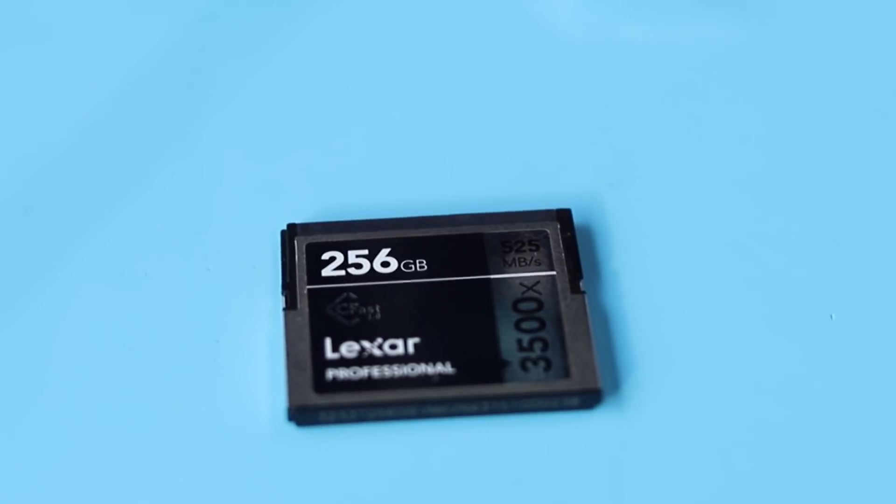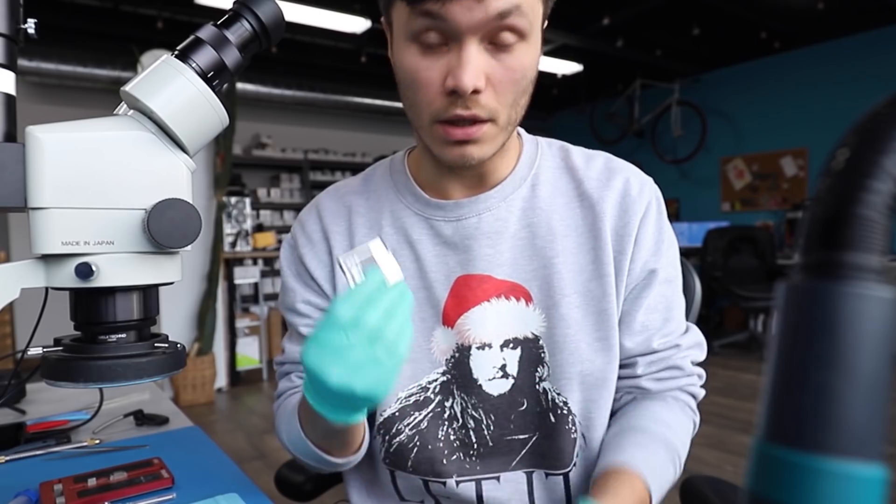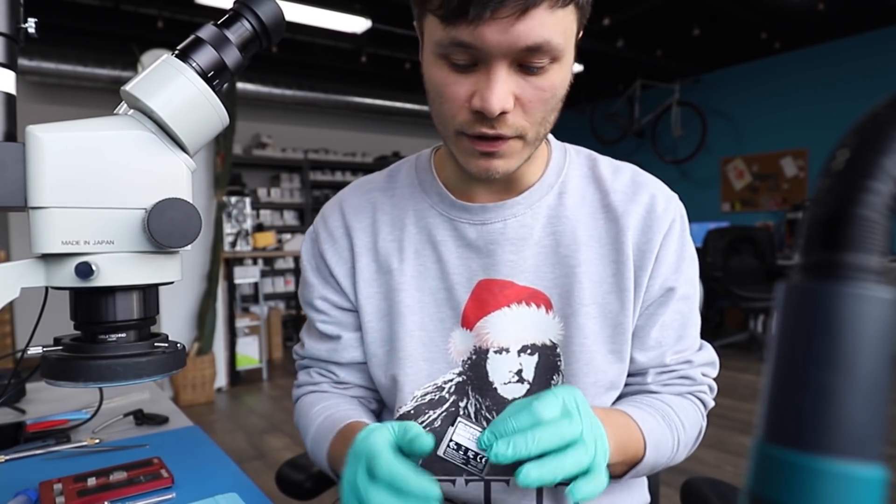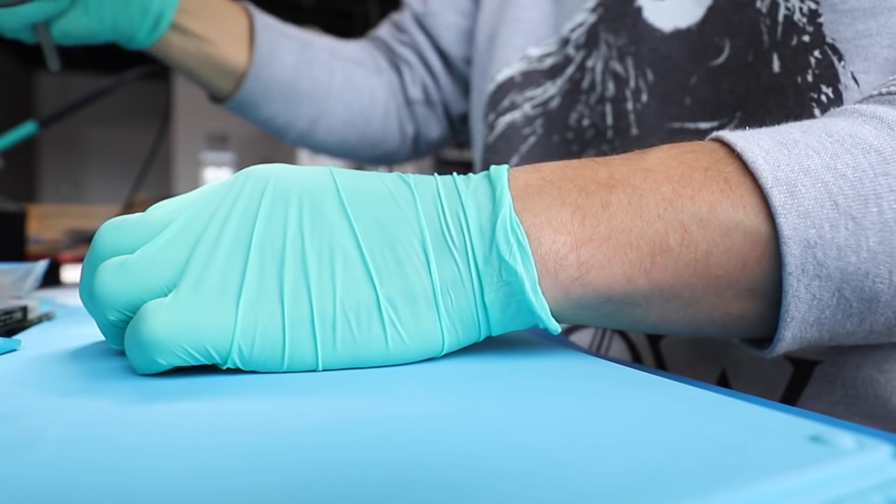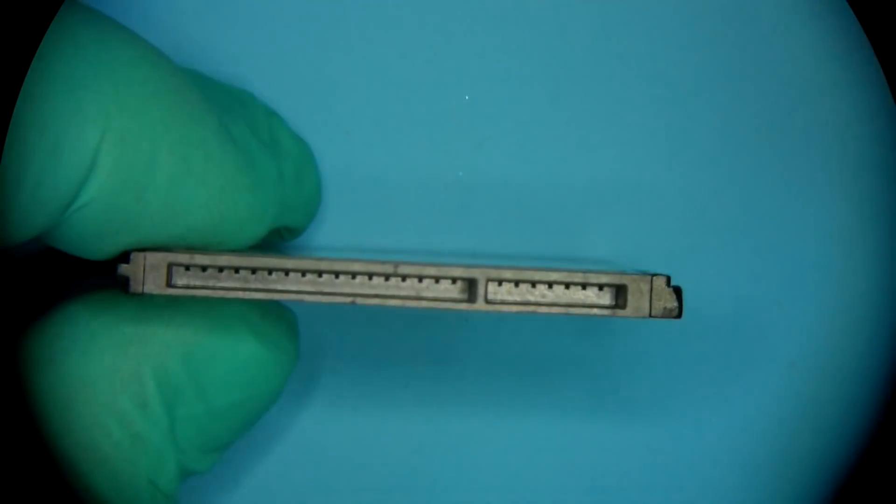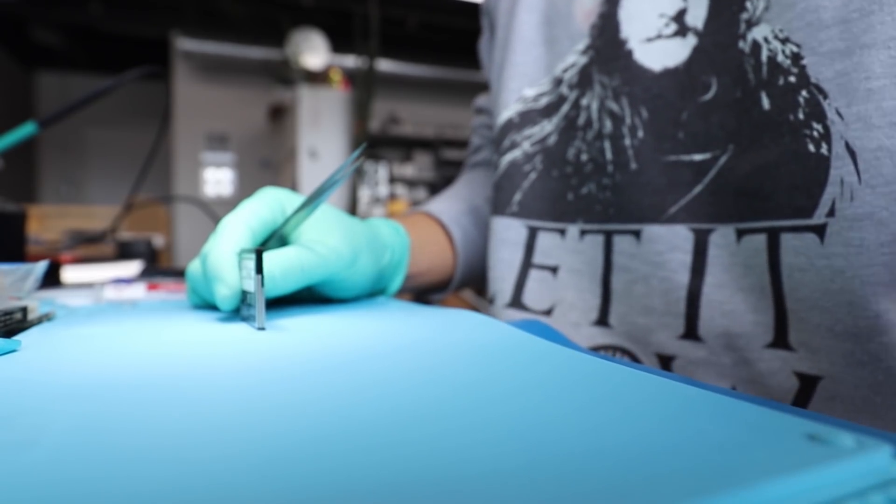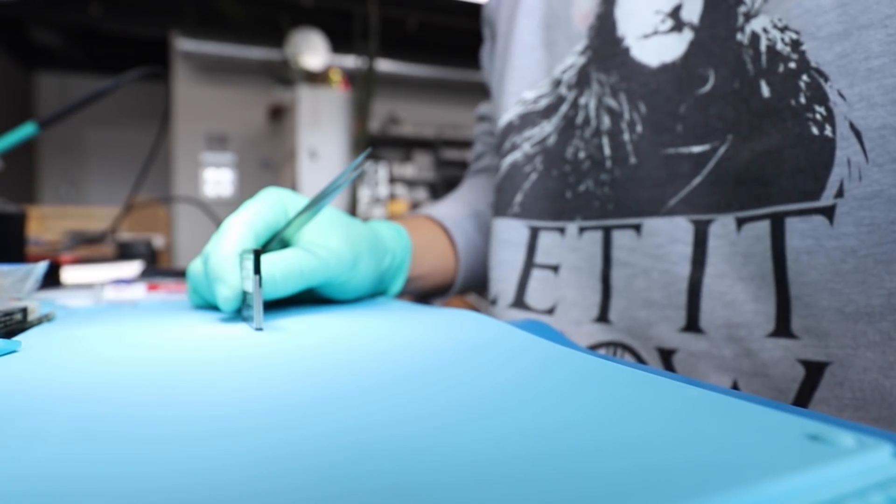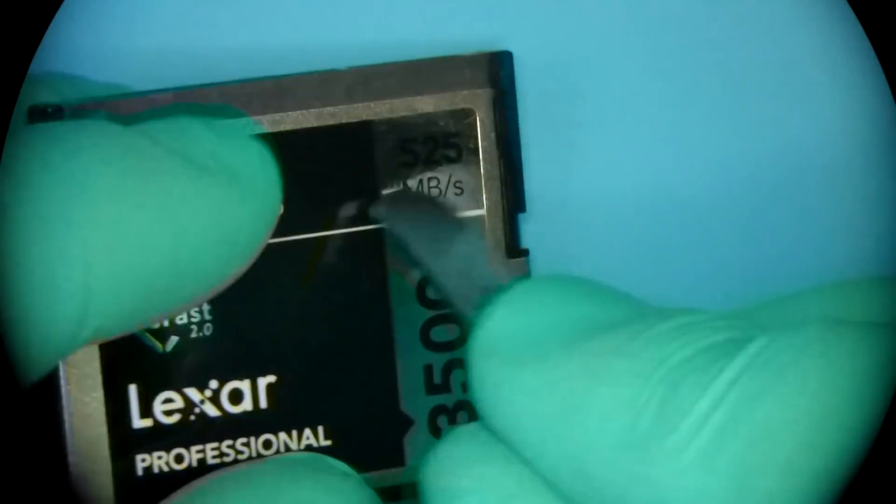This Lexar CFast 2.0 card arrived last week and we need to recover content. One of the main differences between this type of device over regular traditional compact flash is obviously the interface and the speed that comes with it. The fastest compact flash cards we see these days are clocking in around 160 megabytes per second; these cards record much faster.